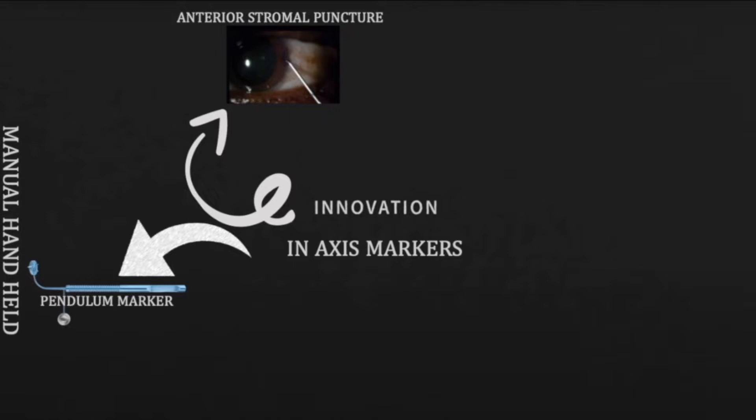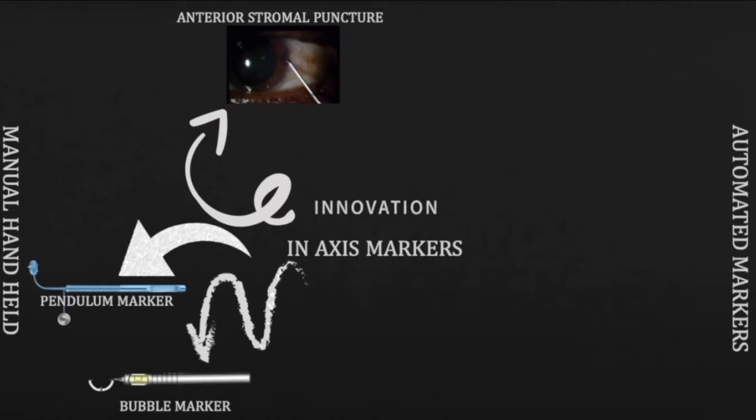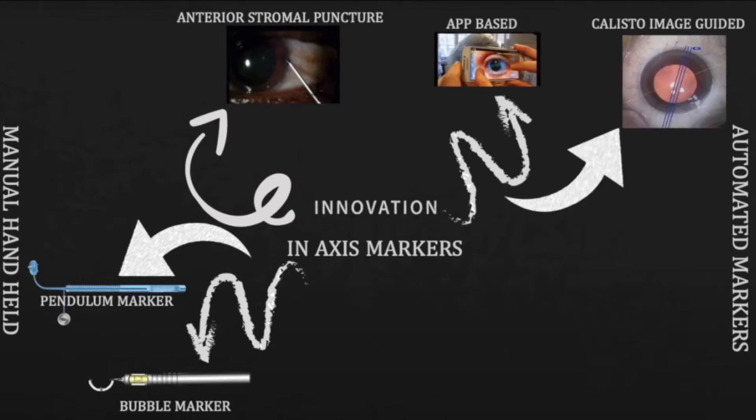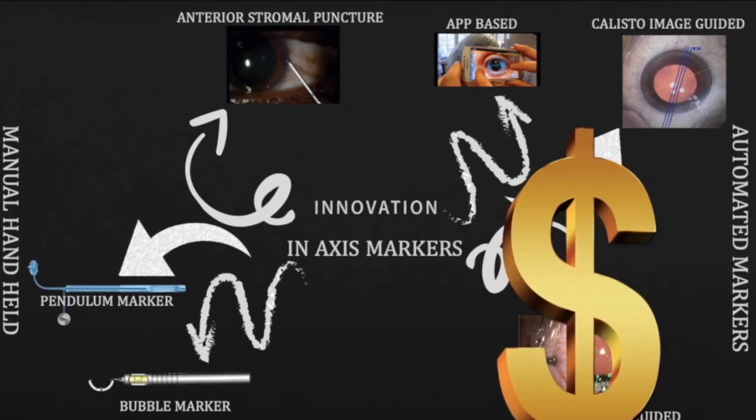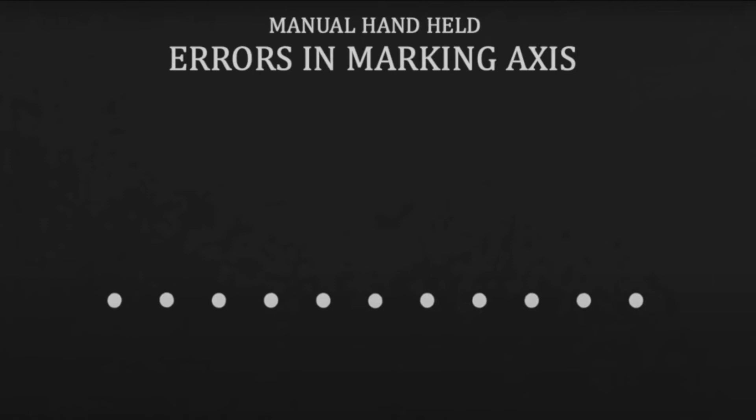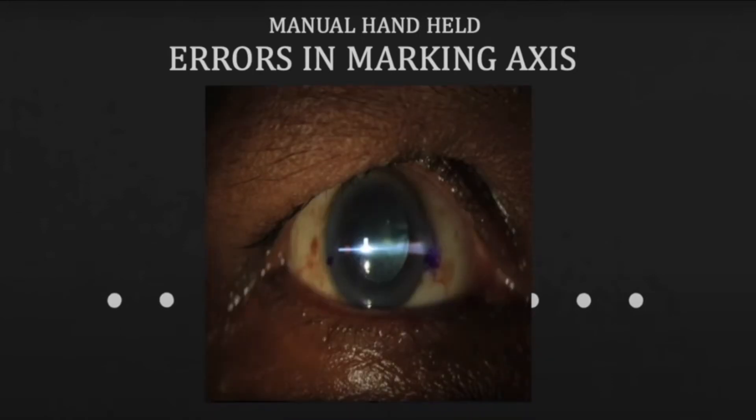On the other hand, automated markers such as the Verion, the application-based marking, and the Callisto image-guided system are also there. But however, they are very expensive. Manual handheld toric markers invariably give us a picture like this which is completely off the axis.